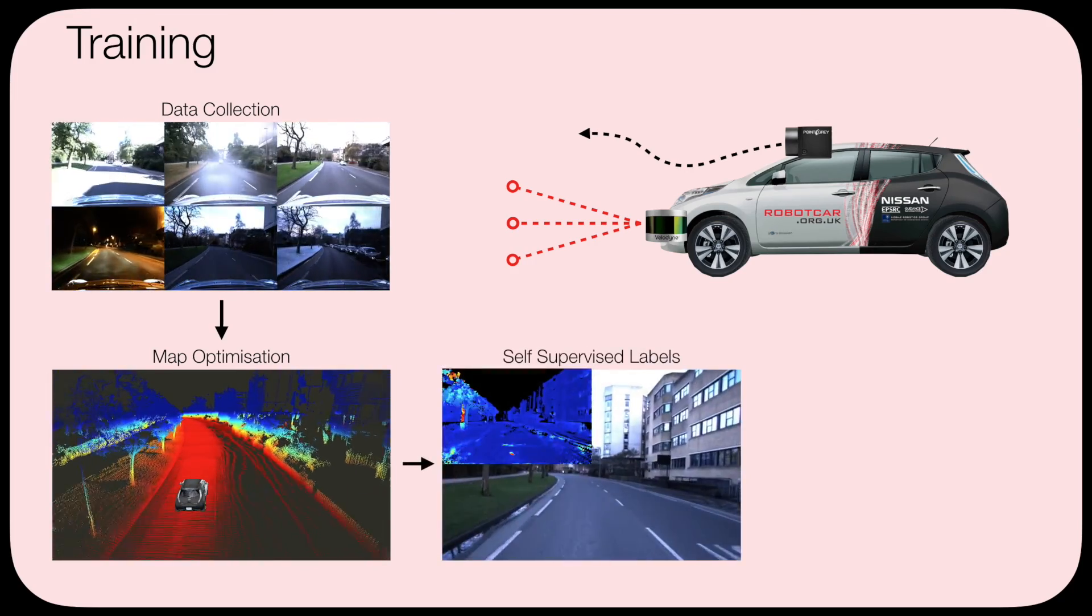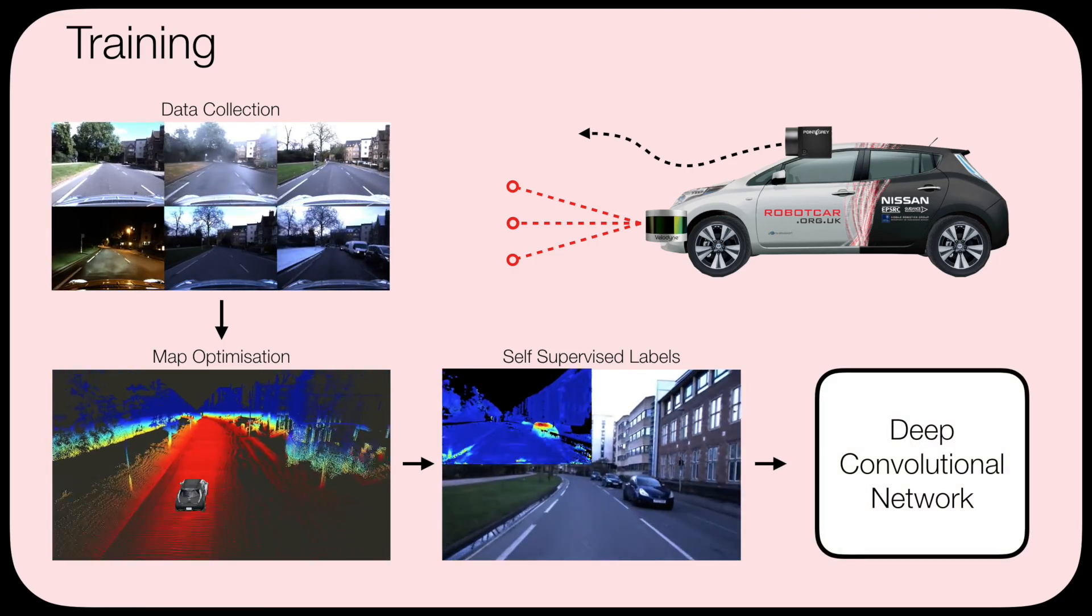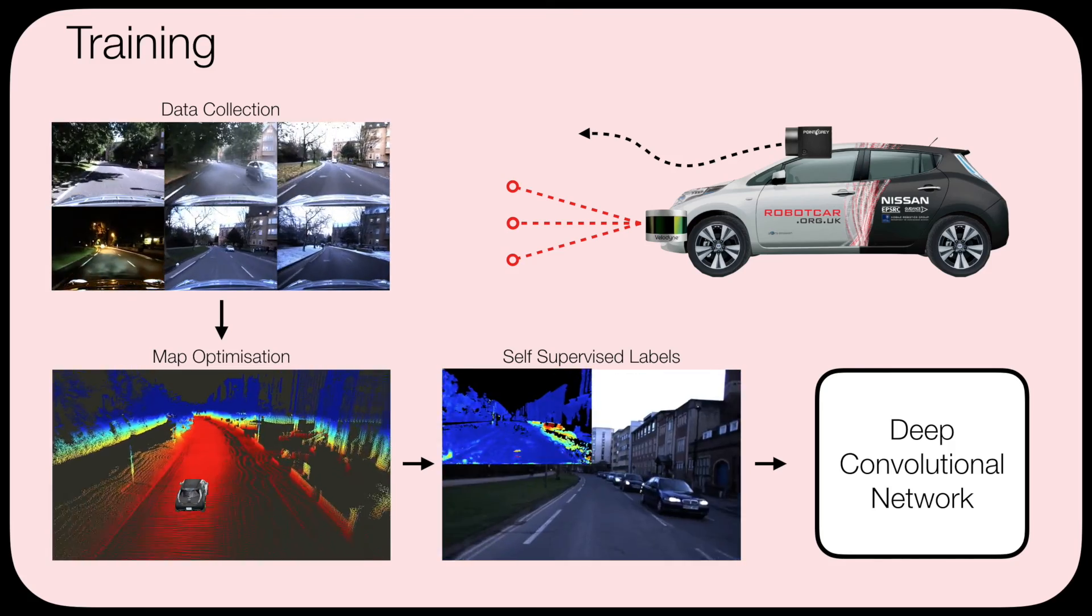We utilize all this data to automatically label images with ephemerality masks to train a deep convolutional network. Our approach needs no manual annotation and is fully self-supervised.